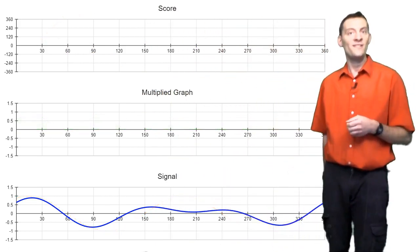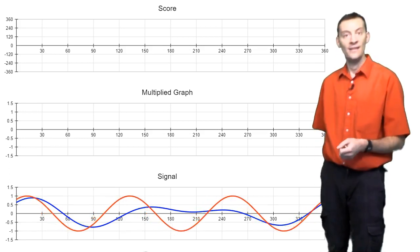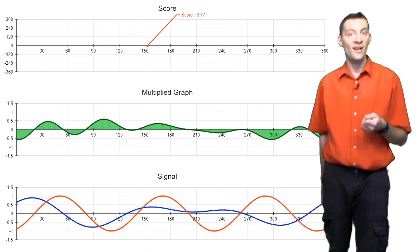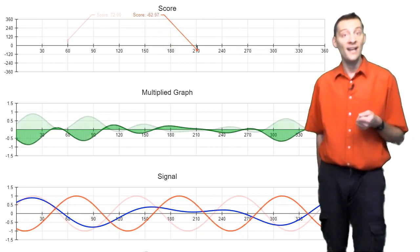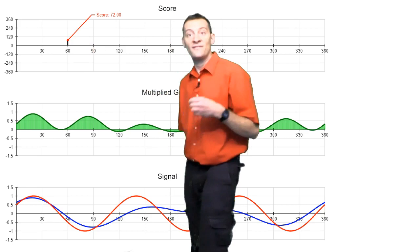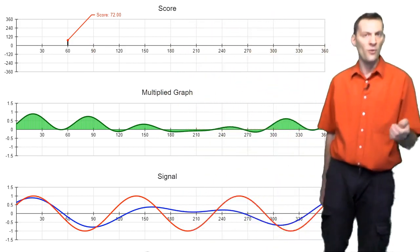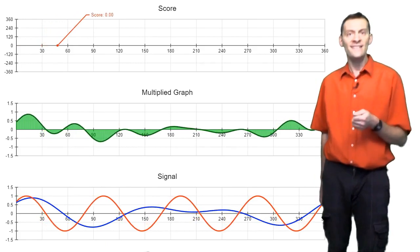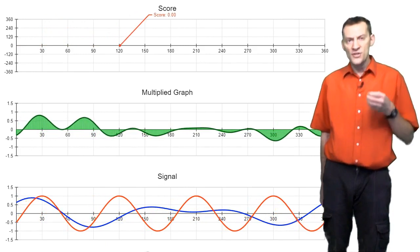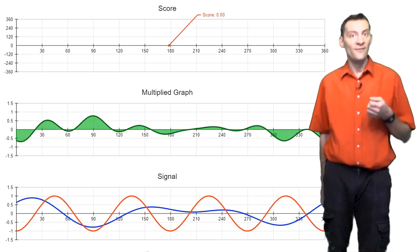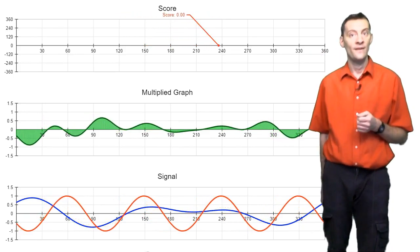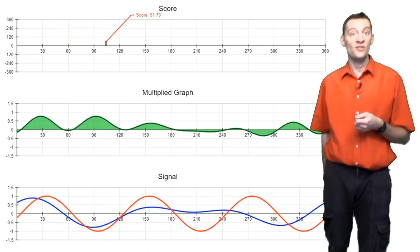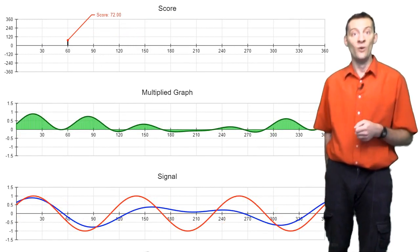Let's try convolving a test wave with a frequency of 3 over our signal. Again, the multiplied signal shifts up and down, so our signal does contain a sine wave with a frequency of 3. The score is at its highest point at 60 degrees, so the phase of this sine wave is 60 degrees. If I were to try a test frequency of 4, I would get 0 again, as this signal does not contain a sine wave with a frequency of 4. So whenever we try a frequency that does not exist in the signal, we get a score of 0 no matter what the phase, and when a frequency does exist, we get a non-zero score. The moment we find the point at which the score is at its maximum, we have found the phase of the sine wave we are looking for.